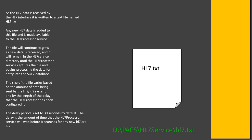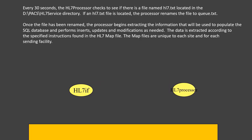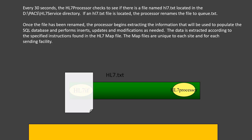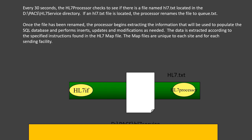The delay period is set to 30 seconds by default — that is the amount of time the HL7 processor will wait before it reads any new HL7 text. Every 30 seconds, the HL7 processor checks to see if there is a file named HL7 text located in the PACS HL7 service history directory. If it is located, the processor renames the file and puts it into queue. Once the file has been renamed, the processor begins to extract the information used to populate the SQL database and perform inserts, updates, and modifications as needed.